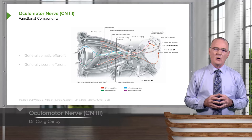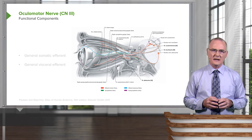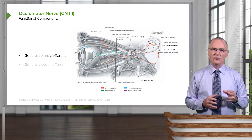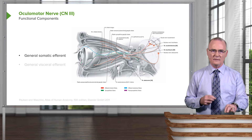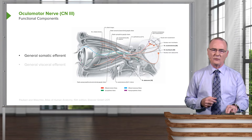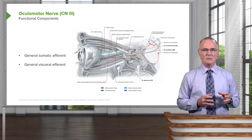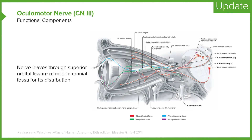The ocular motor nerve is the next one to think about. It has two functional components. First is a general somatic efferent component, as it innervates skeletal muscles. There is also a general visceral efferent component to keep in mind. The third cranial nerve leaves through the superior orbital fissure of the middle cranial fossa for its distribution.